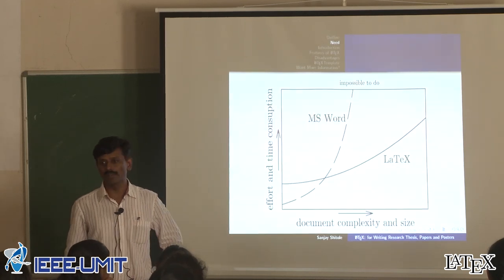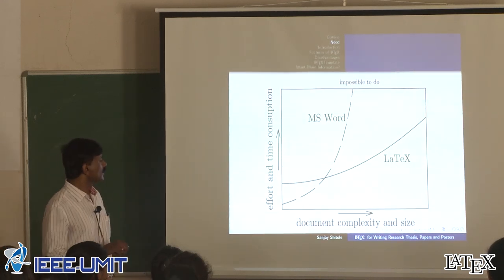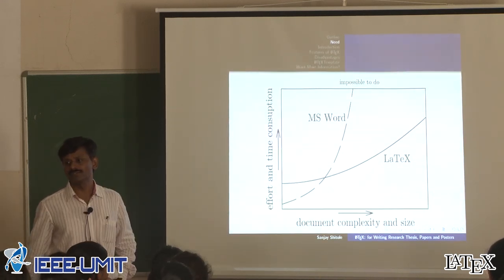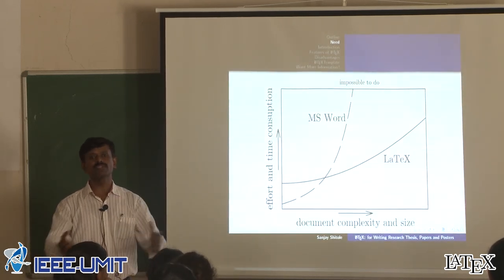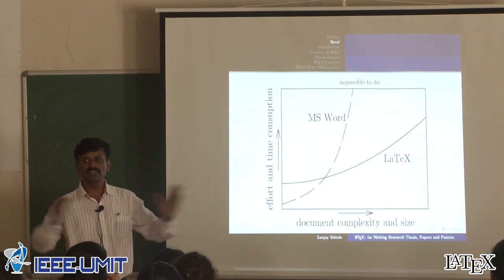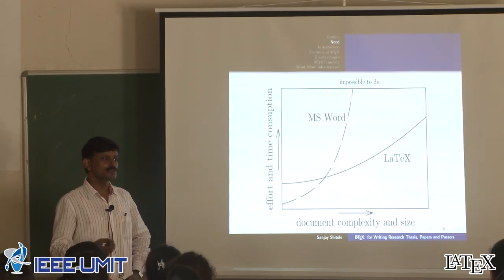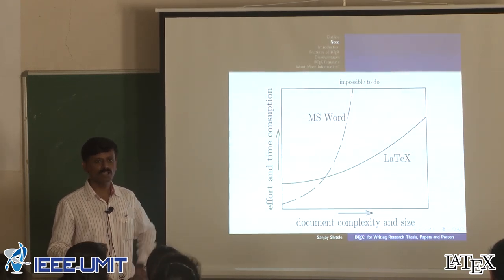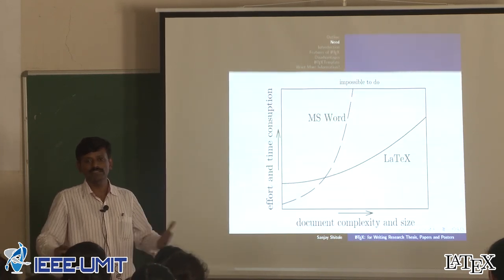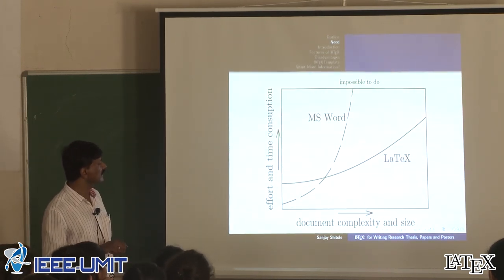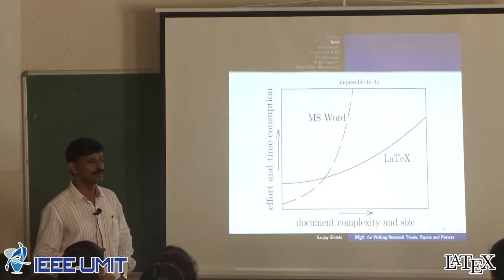This graph shows a comparison between the LaTeX system and the word processor. The horizontal axis shows document complexity and size — how complex the document is, with many figures, mathematical equations, and large page counts like 100, 200, or 300 pages. The vertical axis shows effort and time required. This graph very clearly shows that the LaTeX system will minimize the effort and time required as document complexity and size increase.